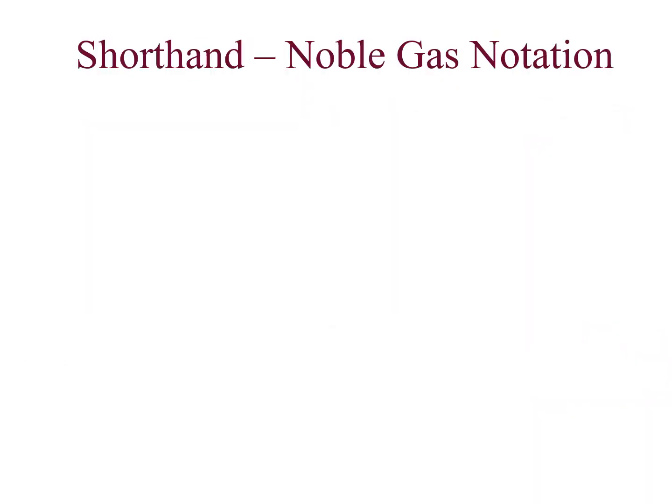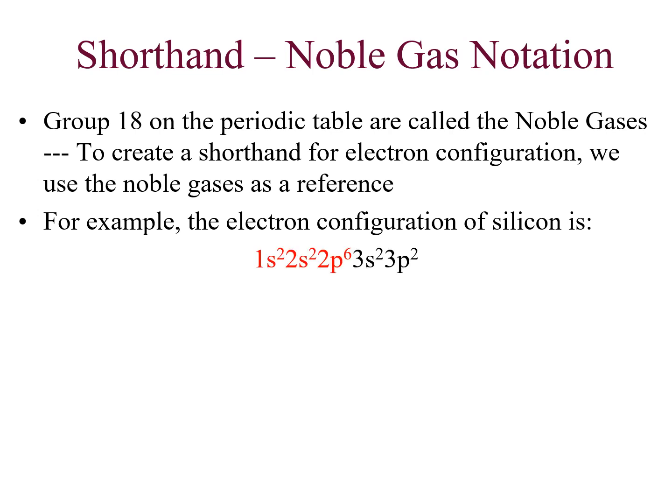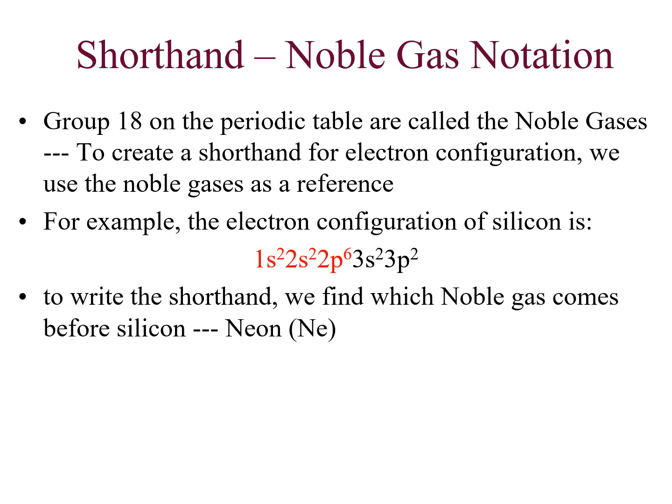Looking at the slide examples: the electronic configuration for silicon is 1s² 2s² 2p⁶ 3s² 3p². Since neon comes before silicon, the condensed form is [Ne] 3s² 3p², because silicon has 14 electrons.